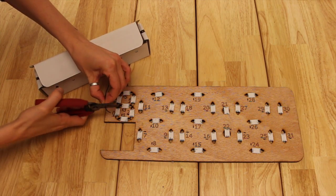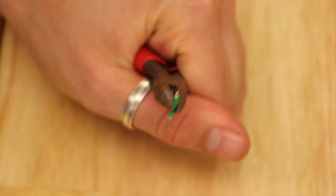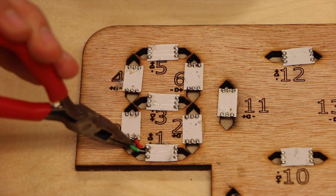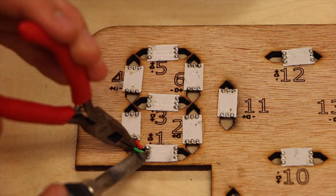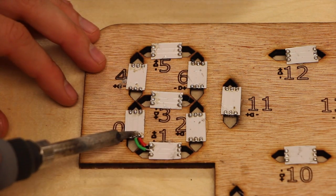Now you can recreate the neopixel strip. Cut, strip, tin, and solder wires between the LEDs ensuring that data always goes to data, 5 volts to 5 volts, ground to ground.